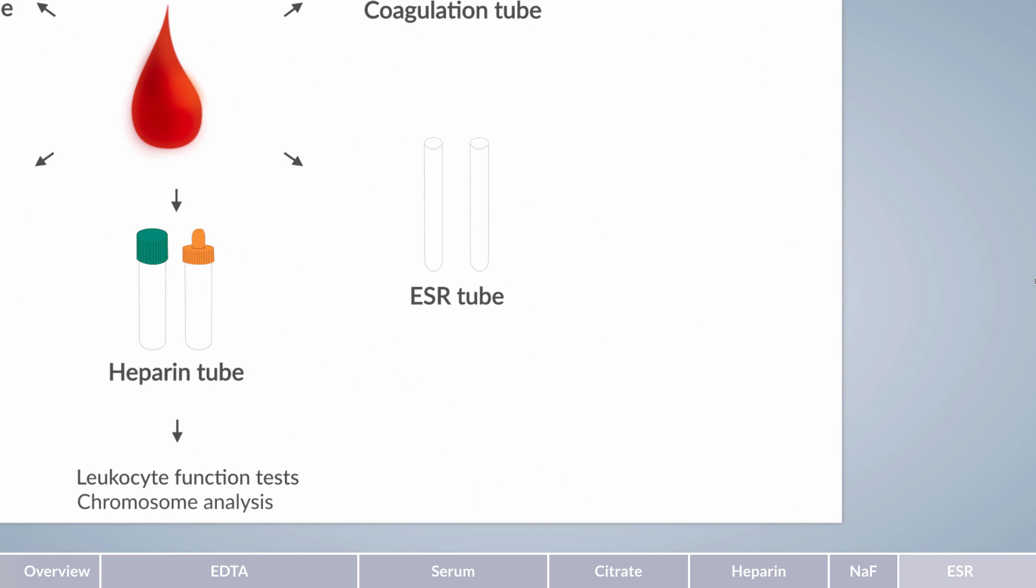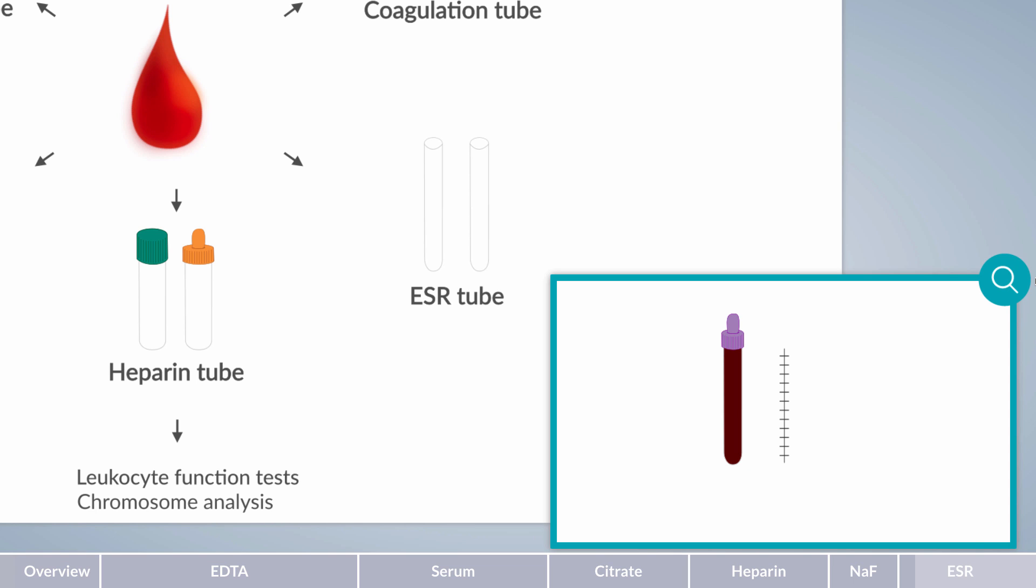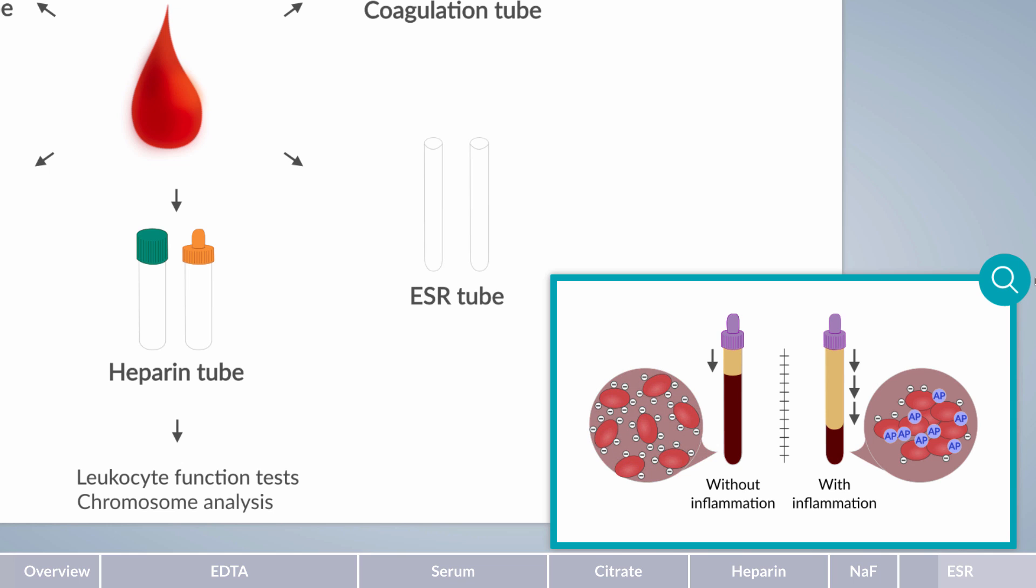Analysis of the erythrocyte sedimentation rate, in short ESR, can provide initial evidence of the presence of an inflammatory process. The collected blood is stored at room temperature for a certain period of time. During this time, a sediment of blood cells is formed. This occurs rapidly if acute phase proteins are increased in blood in response to inflammation. One of the reasons is that acute phase proteins decrease the surface charge of red blood cells.